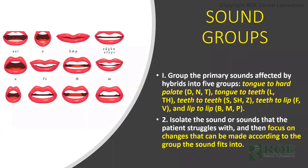There are five different sound groups. First, tongue to hard palate, which is the D, N, T sound. Second, tongue to teeth, which is the L and TH sound. Third, teeth to teeth, which is the S, SH, and Z sound. Fourth, teeth to lips, which is the F and V sound. And fifth, lip to lip, which is the B, M, P sounds. Once we group things into this series of sounds, it's easier to start isolating what we need to work on, and then we can focus on the changes that need to be made.